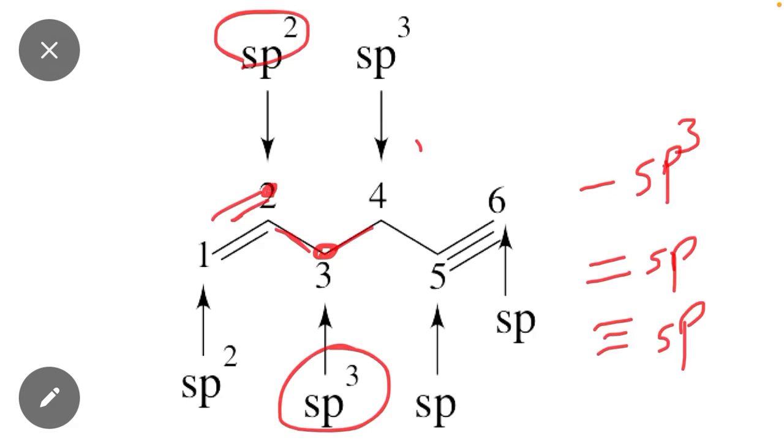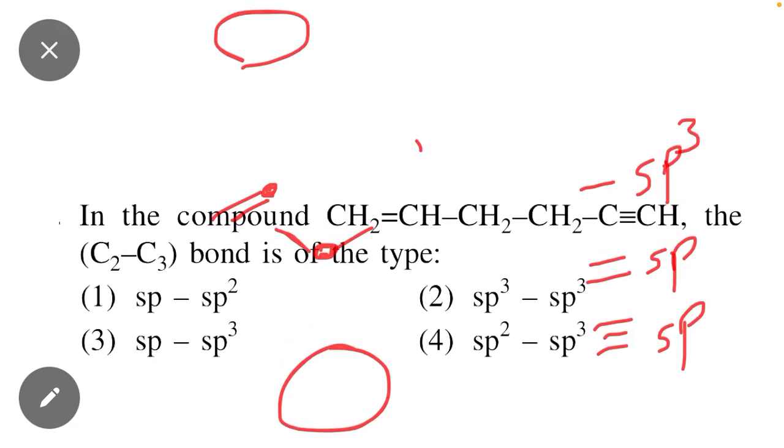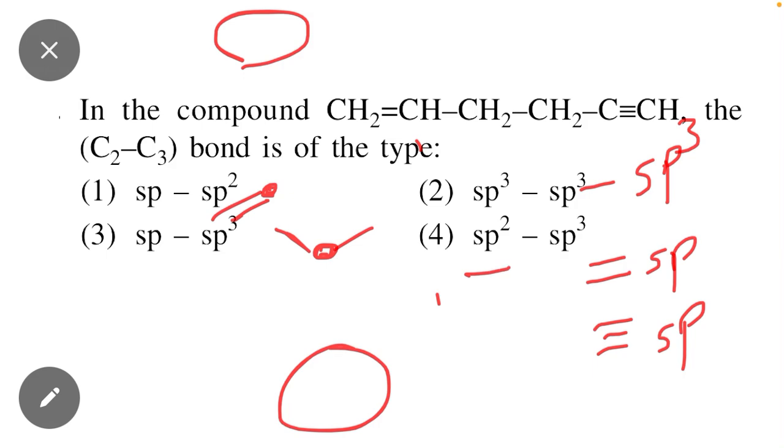Option number D—you can see sp² and sp³. This means option number four of this question is the correct option.